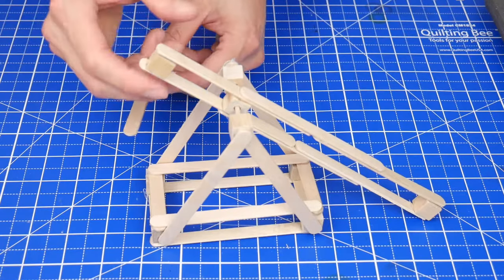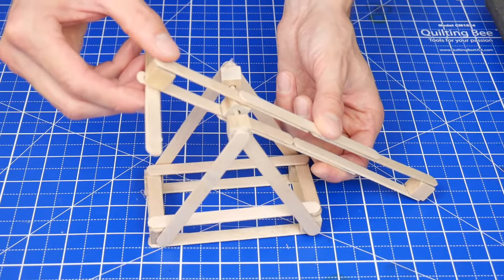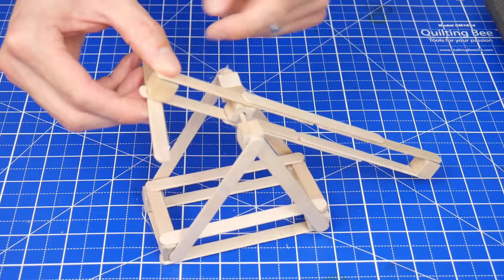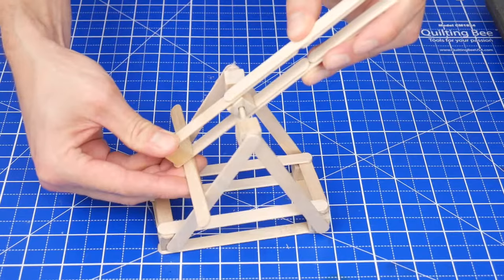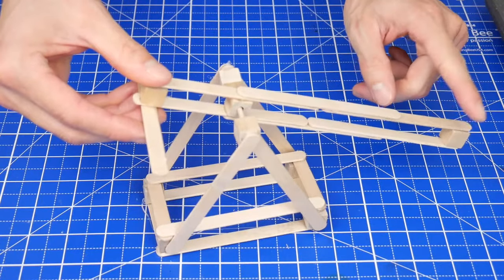Okay, almost done. The next step is to glue a whole craft stick to the underside of the short end of the arm. This is going to prevent the catapult arm from flipping all the way forward and instead it'll stop it short right here which is going to help launch the projectile.